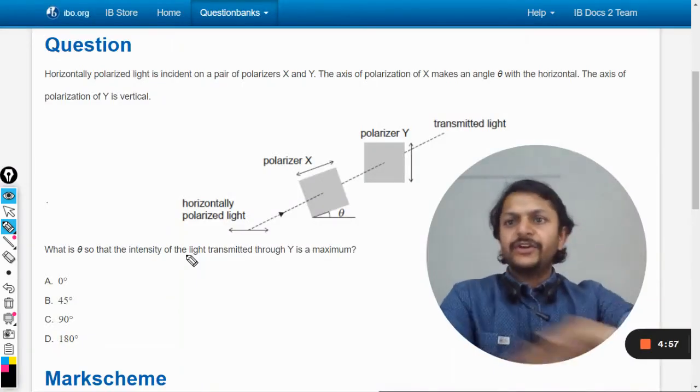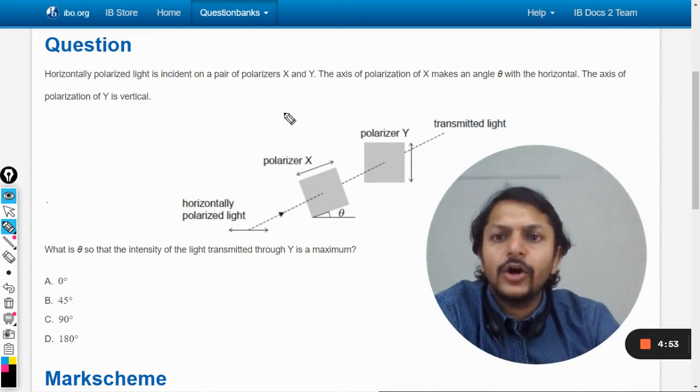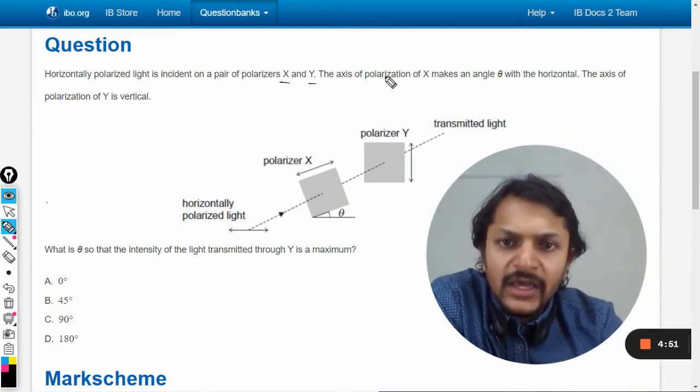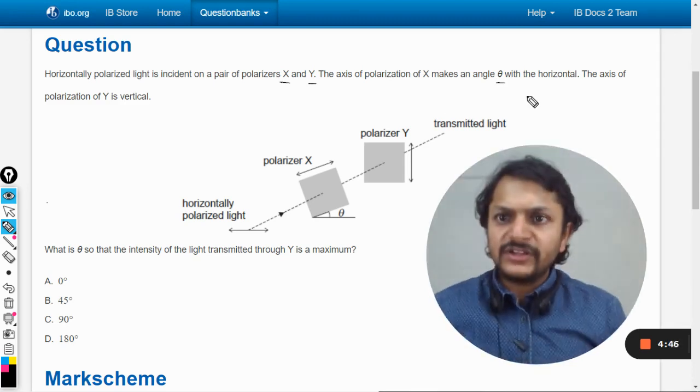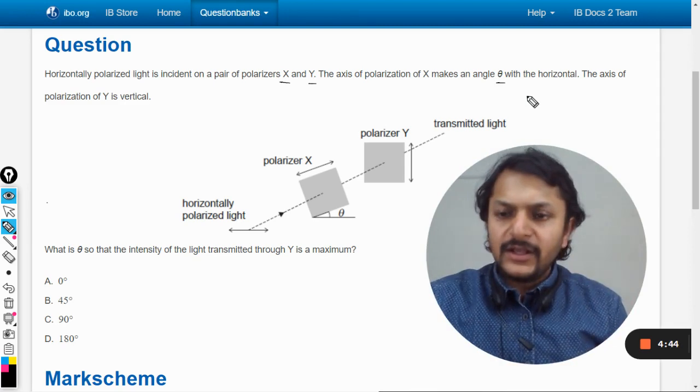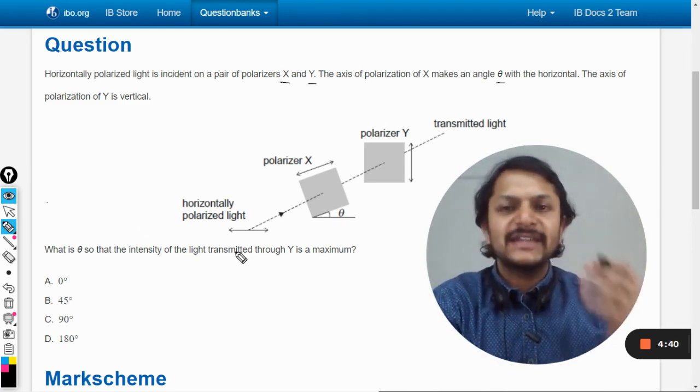Okay dear students, let us see what is there in this question. Horizontally polarized light is incident on a pair of polarizers X and Y. The axis of polarization of X makes an angle theta with the horizontal. The axis of polarization of Y is vertical. What is theta so that the intensity of light transmitted through Y is maximum?